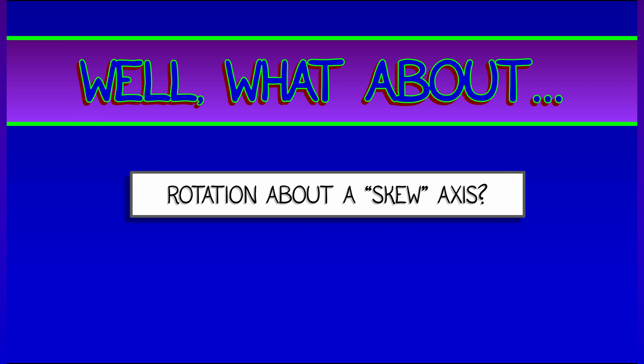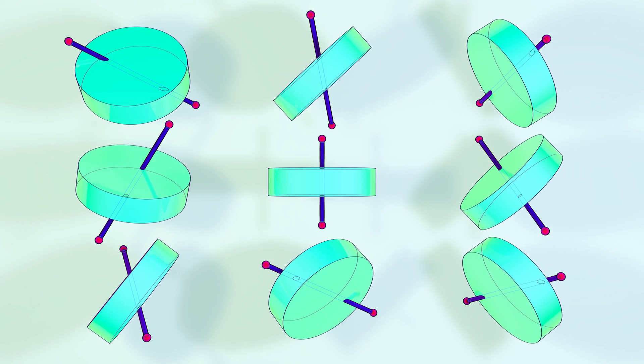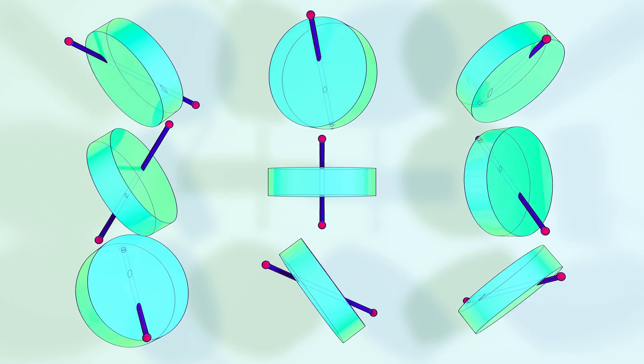Well, what happens when we have rotation about a skew axis? What do I mean by that? I mean, instead of rotating about the x or y or z axis, we just pick some random direction, some skew direction, and we try to rotate the body about that.